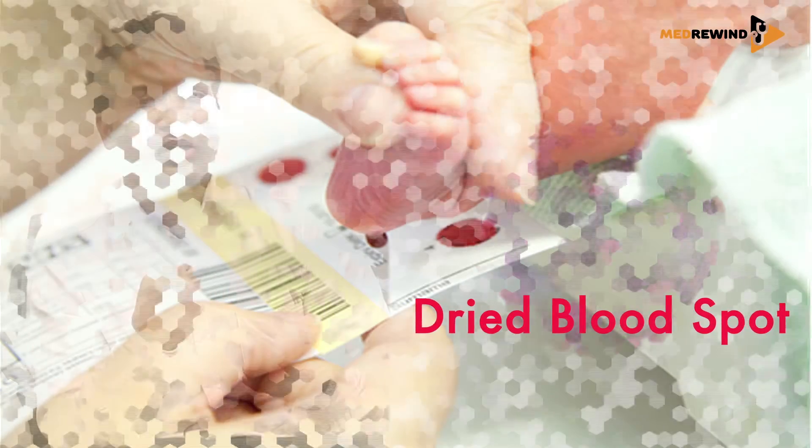This early infant diagnosis is done using a dried blood spot. It is an antigen-based test because we cannot rely on antibody-based tests so early in life.